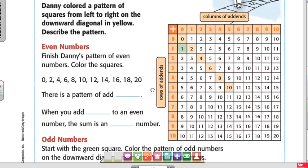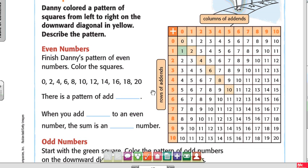Look at the example. It says Danny colored a pattern of squares from left to right on the downward diagonal in yellow. So this is what he did right here. He shaded those in. Finish Danny's pattern of even numbers. Color the squares.